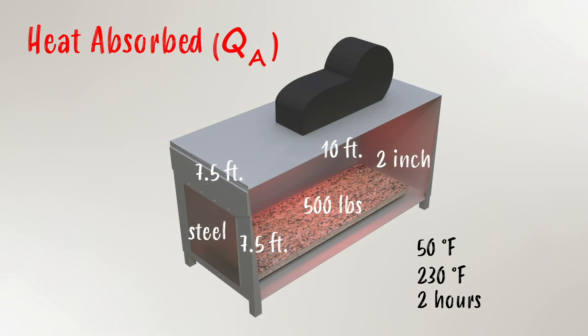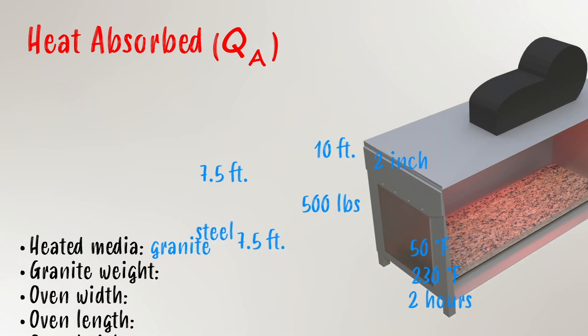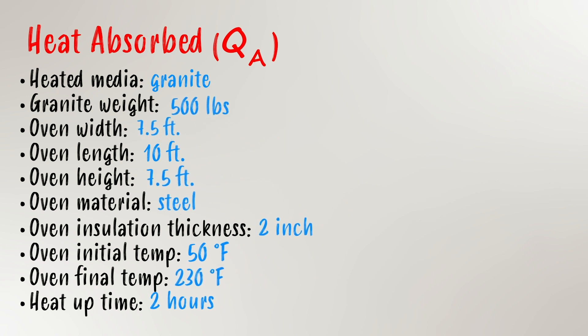So we start with a list: heated media — granite; weight — 500 pounds; oven dimensions — width 7.5 feet, length 10 feet, height 7.5 feet; material — steel; insulation — two inches thick fiberglass; initial temp — 50°F; final temp — 230°F; and heat-up time — two hours.